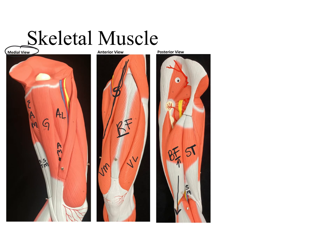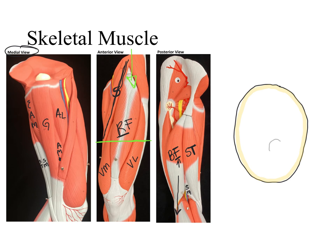Let's imagine a transverse section of the thigh viewed from a superior perspective. The first thing we would see is the skin on the outermost part, then underneath the skin the subcutaneous layer, which has adipose tissue in it. The only bone in our thigh is the femur. In the anterior aspect we place the rectus femoris, medially the vastus medialis, laterally the vastus lateralis, posteriorly the vastus intermedius, and crossing from side to side the sartorius.